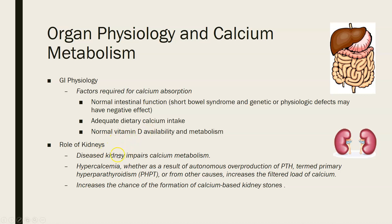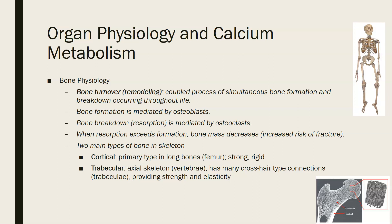Diseased kidneys impair calcium metabolism because the kidneys either excrete excess calcium in the urine or reabsorb it back into the blood. Hypercalcemia — whether from autonomous PTH overproduction in primary hyperparathyroidism or other causes — increases the filtered calcium load in the kidneys and raises the risk of forming calcium-based kidney stones, such as calcium oxalate stones.